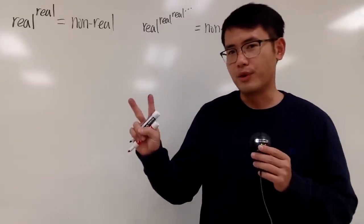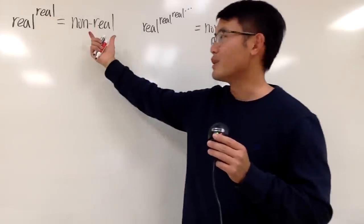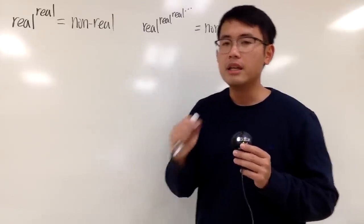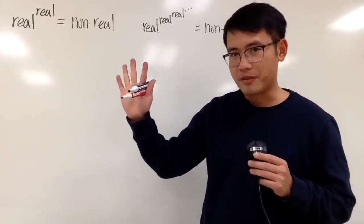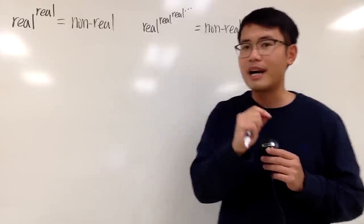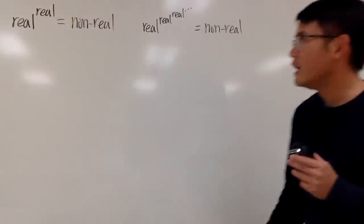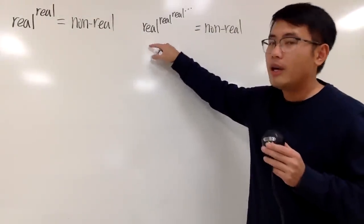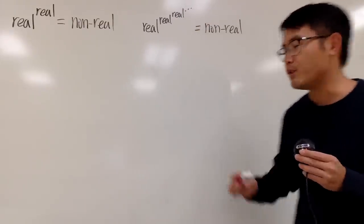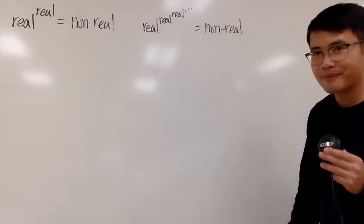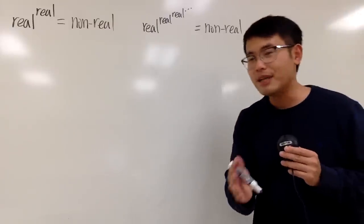Let's do something fun — I have two questions for you. First: is it possible to have a real number raised to a real number power where the result is non-real? I write 'non-real' instead of 'complex' because any real number is technically also a complex number — for example, five equals five plus zero-i. So I want strictly non-real. The second question: is it possible to have a real number raised to a real number, repeated as an infinite power tower, and end up with a non-real result? The numbers don't have to be the same. Please pause and try this first.